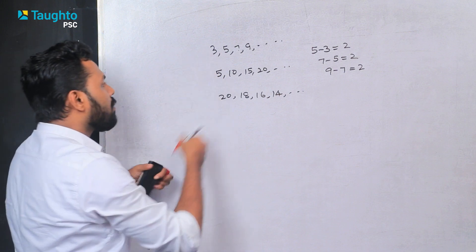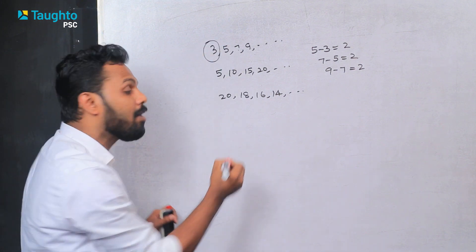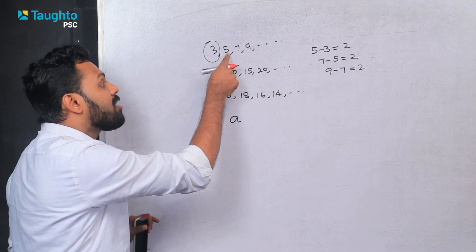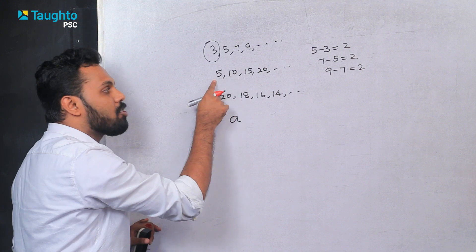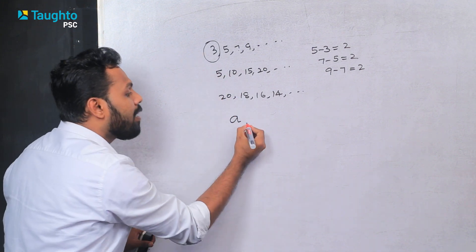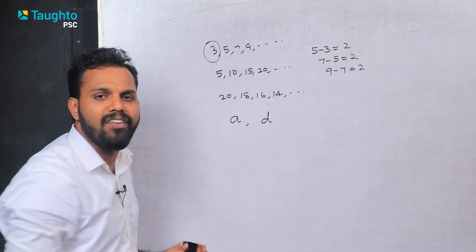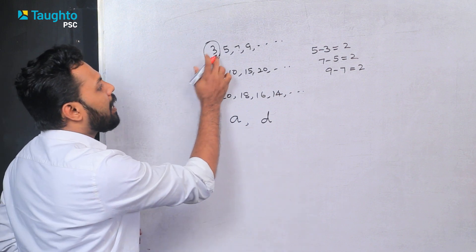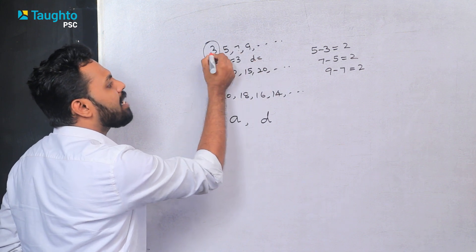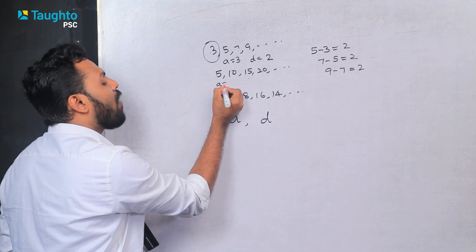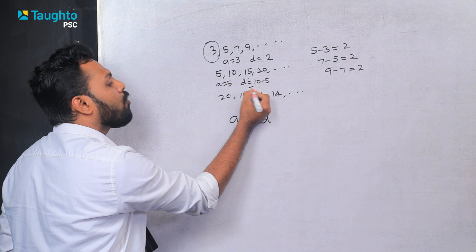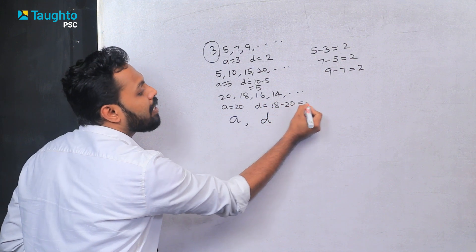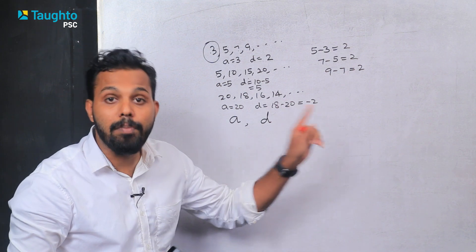We will say in this case the same way. We denote this as the first term A and the common difference D. If the answer is 5, 3 or 8, 9, 15, 18 — what is the common difference? Here: A equals 3, D equals 5 minus 3 equals 2. Here: A equals 5, D equals 10 minus 5 equals 5. Here: A equals 20, D equals 18 minus 20 equals minus 2.